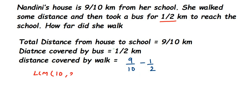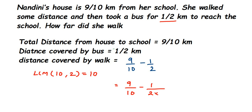We take the LCM of 10 and 2, which equals 10. Now we find equivalent fractions with denominator 10. The first number stays as 9/10. For 1/2, we need to find the equivalent fraction — we multiply both numerator and denominator by 5, because 2 times 5 equals 10. So 1/2 becomes 5/10.